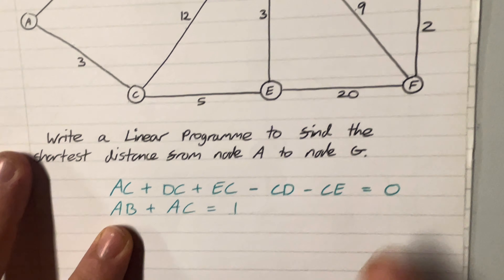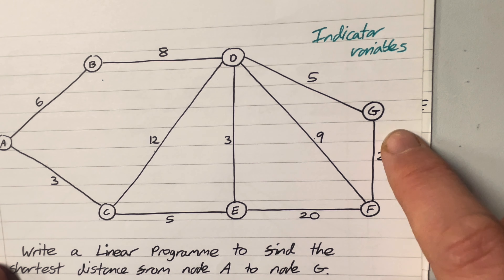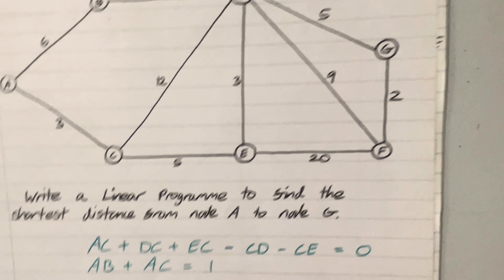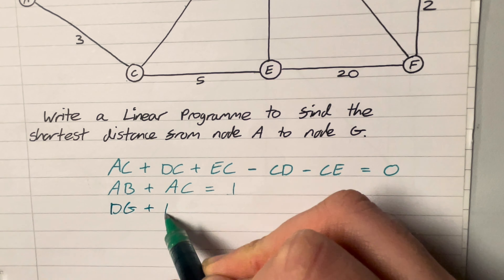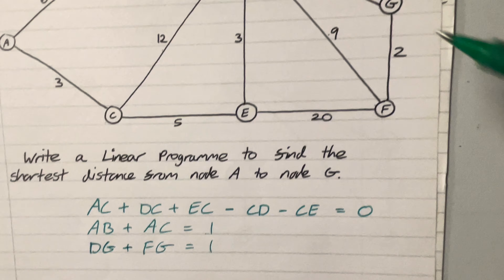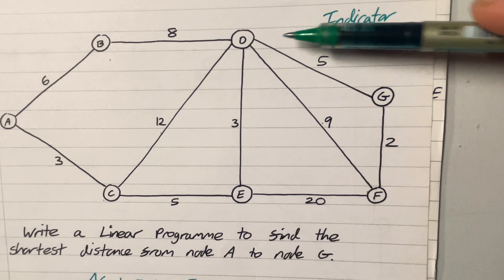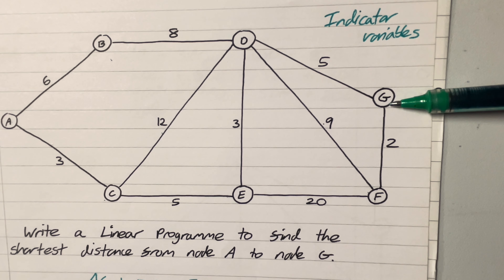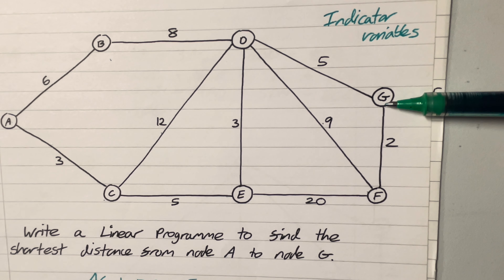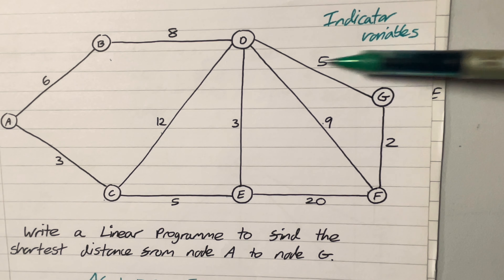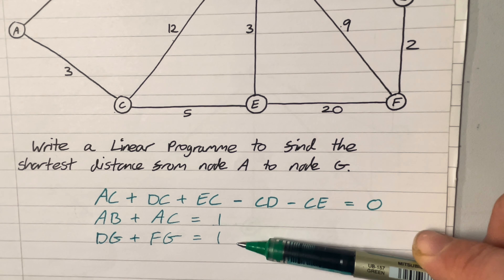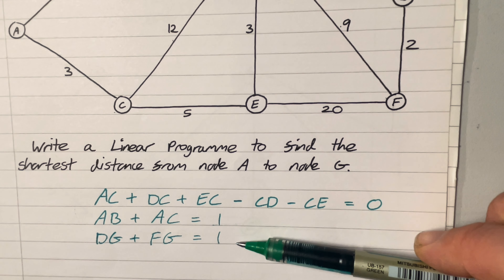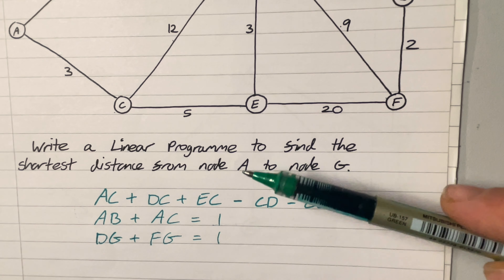I also need to ensure I arrive at the end node without leaving it. To get to G, I'm either going to use arc DG or FG. For the same argument in reverse, to get to G I'm either coming in via D and stopping, or coming in via F and stopping — it can't be both, it can't be none. It's got to be exactly one of those two arcs, giving the constraint DG plus FG equals 1. That gives us seven constraints in total.